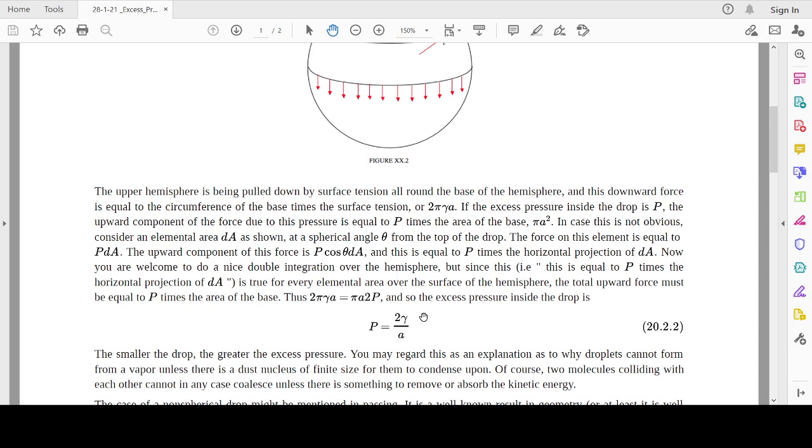That is why droplets cannot form from a vapor unless there is a dust nucleus of finite size for them to condense upon. Of course, two molecules colliding with each other cannot coalesce unless there is something to remove the excess pressure.